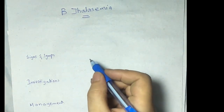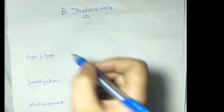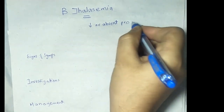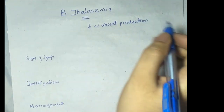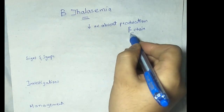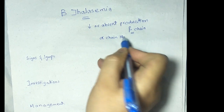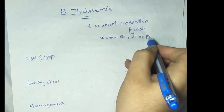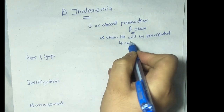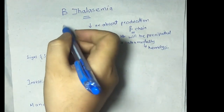Assalamu alaikum everyone. In this video we will discuss what is beta thalassemia. Beta thalassemia is an autosomal recessive disorder in which there is decrease or absent production of the beta chain of hemoglobin. Whenever there is decrease or absent production of the beta chain, the alpha chain of hemoglobin will be precipitated, and this causes intramedullary hemolysis.